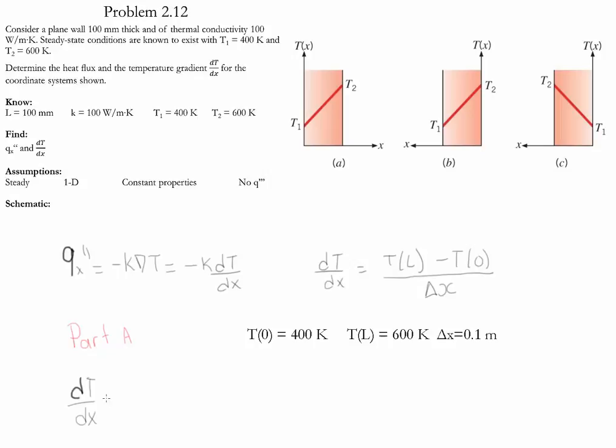The gradient of the temperature in this case is given by 600 Kelvin, which is the temperature at L, minus 400 Kelvin, which is the temperature at position 0, divided by the distance which is 0.1 meter. This value gives you 2,000 Kelvin per meter. If we substitute this value into the flux equation for this particular case, we get a flux of negative 2 times 10 to the fifth watts per meter squared.